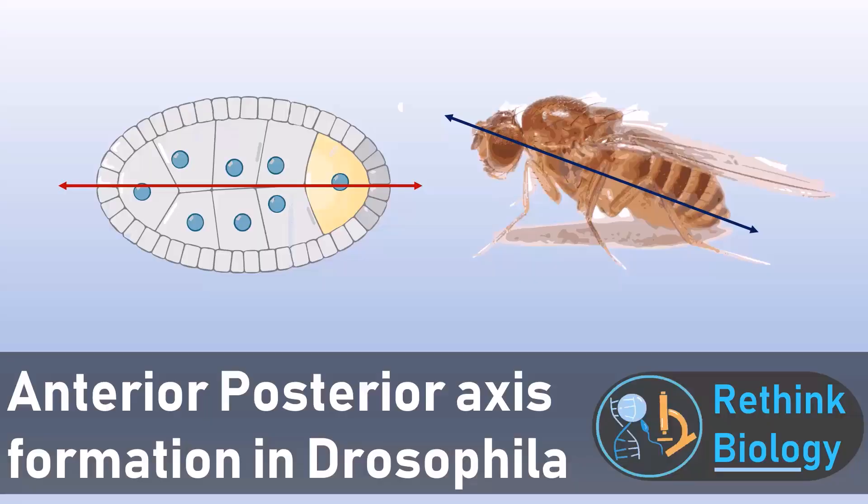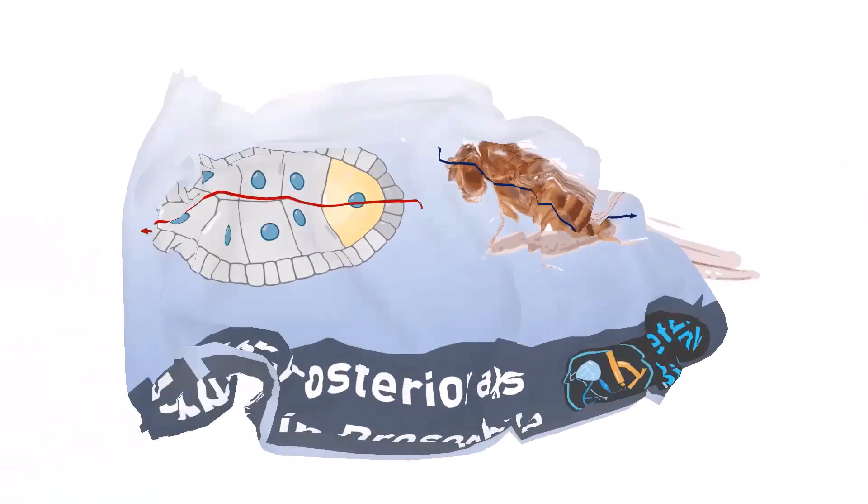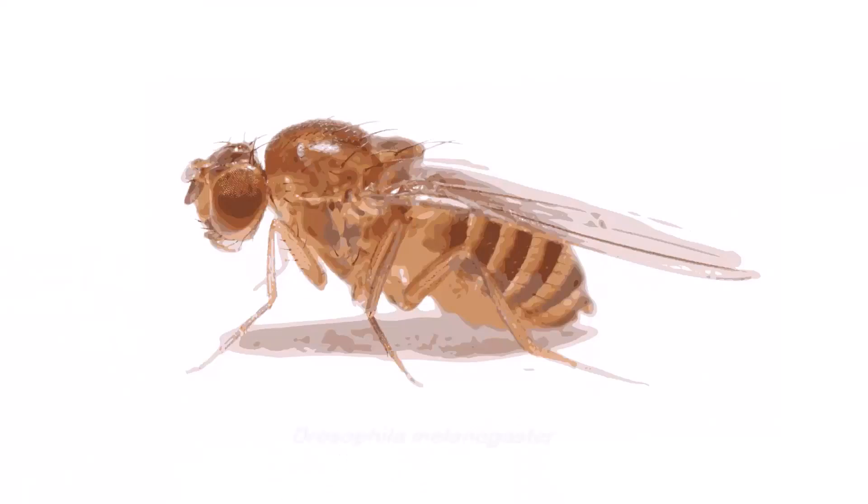Today we will learn about a basic topic in developmental biology, the anterior-posterior axis formation in Drosophila. This is an adult fruit fly, Drosophila melanogaster, in which the anterior to posterior axis is shown.